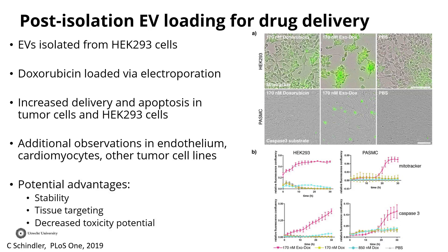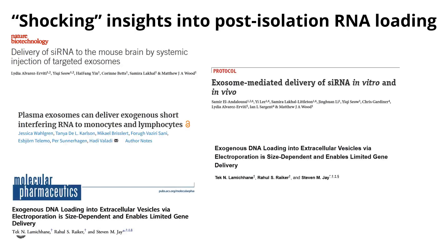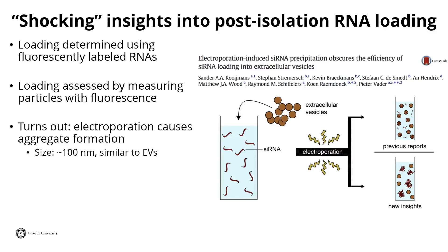I quickly wanted to discuss something important about electroporation of RNAs into EVs. When this was first published, results seemed surprisingly efficient. But it turns out we may have overestimated this technique's efficiency — what people did was check for fluorescently labeled siRNAs electroporated into EVs and looked for 100 nm fluorescent particles. In reality, we were also creating 100 nm aggregates through electroporation. This is not to say the technique doesn't work — reputable groups have done so — but incorporate the right controls if you go down this route.